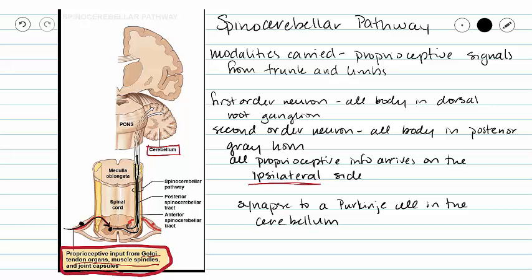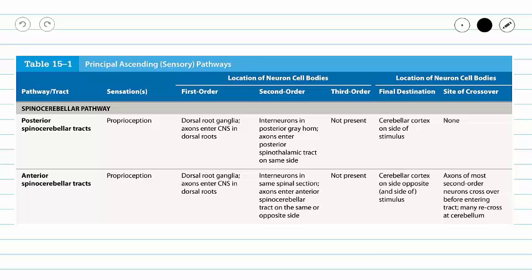Because we don't have a third order neuron in our spinocerebellar tracts, this information is never making it up to our cerebrum, and so it does not reach conscious awareness. Instead, we land in our cerebellum — our final destination is our cerebellar cortex.